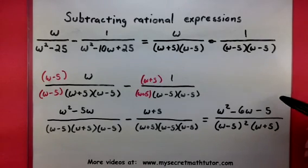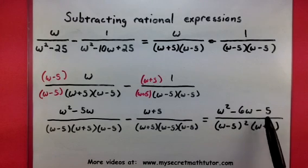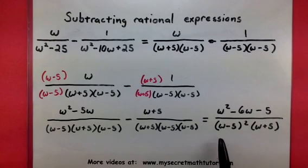Now, unfortunately, the top actually doesn't factor, which means that I won't be able to cancel out anything else from here. Well, if I can't cancel anything else out, it means that this answer is simplified as much as possible. So, in the end, our final answer is w squared minus 6w minus 5, all divided by w minus 5 squared times w plus 5.